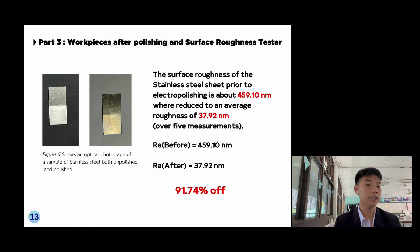Part 3: workpiece after polishing and surface roughness testing. Figure 5 shows an optical photograph of samples of stainless steel both unpolished and polished. The surface roughness of stainless steel sheets prior to electropolishing is about 459.10 nanometers, whereas after polishing it reduced to an average roughness of 37.92 nanometers. This is a 91.74% improvement.